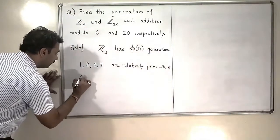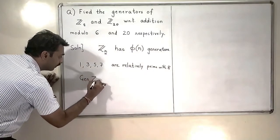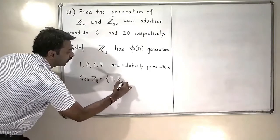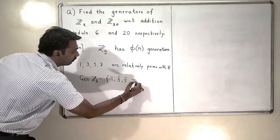This means that the generators of Z8 will become 1 bar, 3 bar, 5 bar and 7 bar.